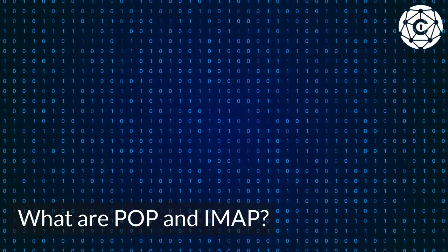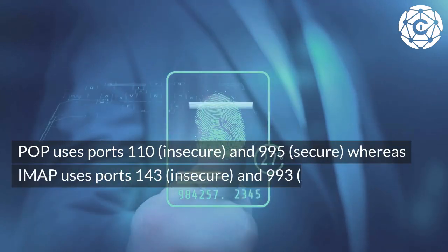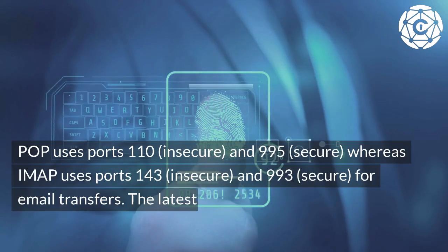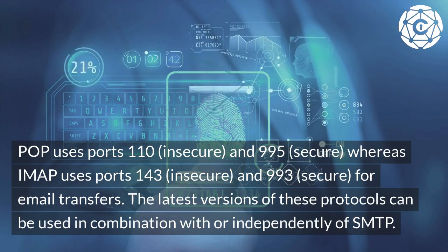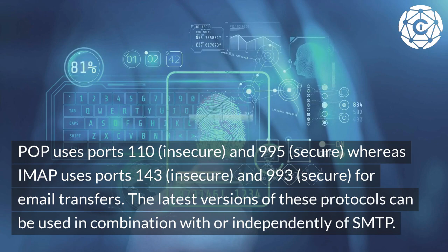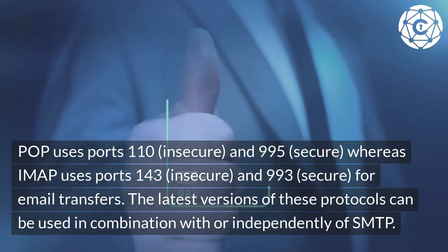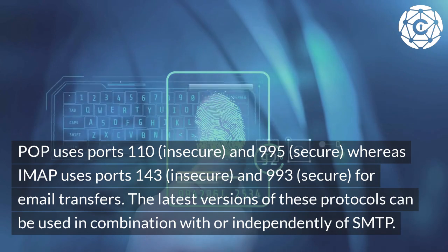What are POP and IMAP? POP uses ports 110 (insecure) and 995 (secure), whereas IMAP uses ports 143 (insecure) and 993 (secure) for email transfers. The latest versions of these protocols can be used in combination with or independently of SMTP.